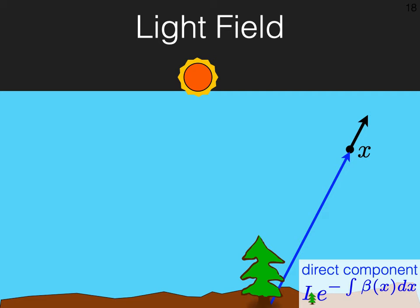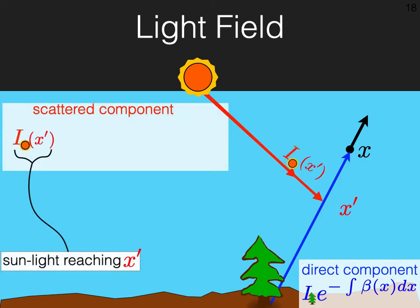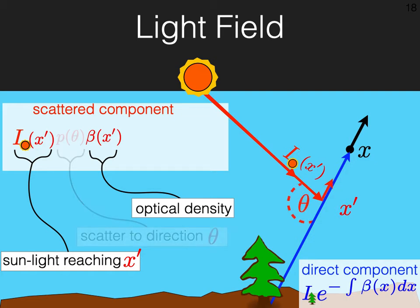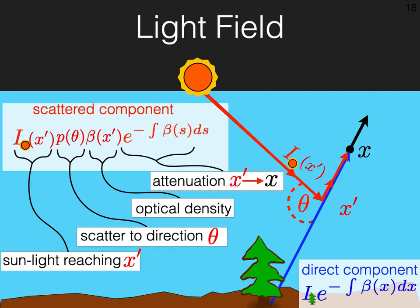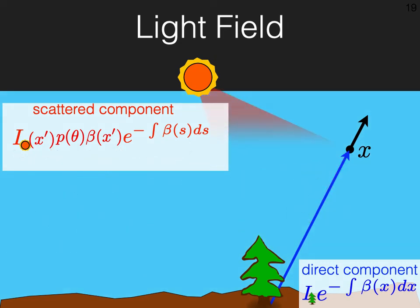In a single scattering model, there is the direct component and the scattered component, which is the sunlight reaching point x' times the optical density at this point, times the fraction of light scattered into that specific direction, and the attenuation up to point x. Now, this is integrated throughout the line of sight over x' to give the single scattered component.